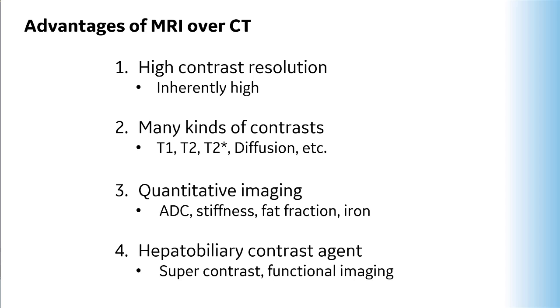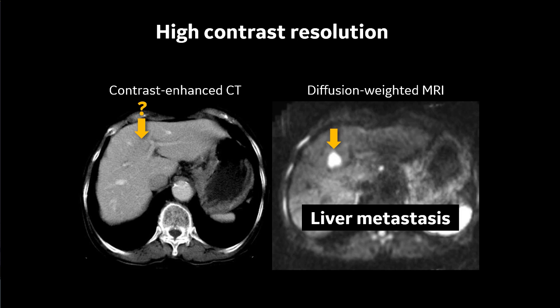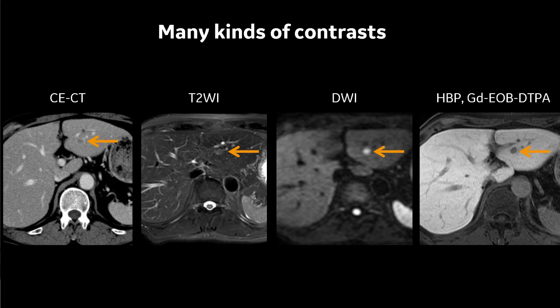Let me share some cases showing these advantages. On contrast-enhanced CT of a liver metastases case, we can't see anything — but on diffusion-weighted MRI, the metastasis is obvious in the right lobe of the liver. For the variety of contrasts advantage: a very tiny nodule on contrast-enhanced CT is not contrast-enhanced, so we can't characterize it. On T2-weighted image it shows moderately high signal intensity, on diffusion it's high signal, and on hepatobiliary phase it shows low signal intensity. The combination of these three contrasts leads to the conclusion: this is a metastasis.